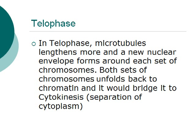Lastly, in the telophase, microtubules lengthen more, and a new nuclear envelope forms around each set of chromosomes. Both sets of chromosomes unfold back to chromatin, and it bridges to cytokinesis — the separation of cytoplasm. After that, the cycle would repeat again.